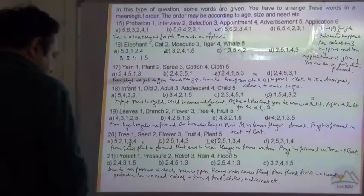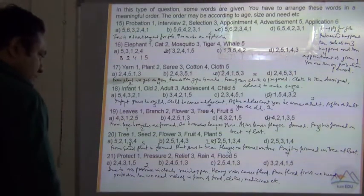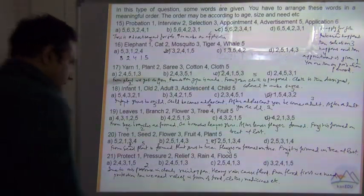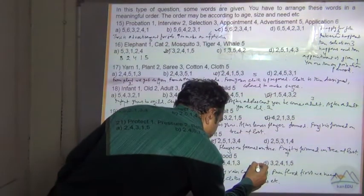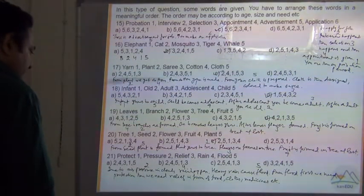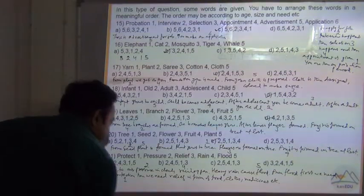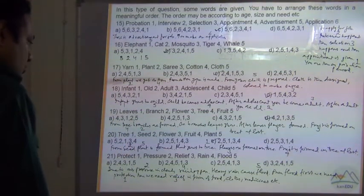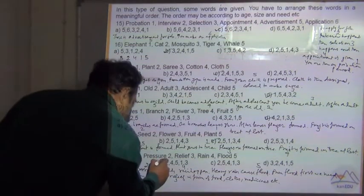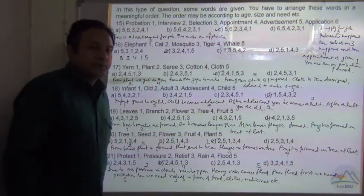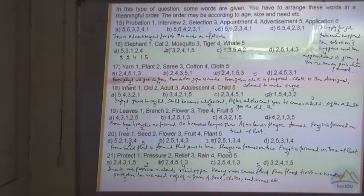So due to air pressure in clouds, rain happens, heavy rain causes flood, and from flood first we need protection, then we need relief in the form of food, clothes, medicine, etc. So air pressure, that is pressure 2, then rain happens, that is 4. Heavy rain causes flood 5. From flood we need protection, that is 1. Then we need relief, that is 3. So 2, 4, 5, 1, 3. Your answer is B.